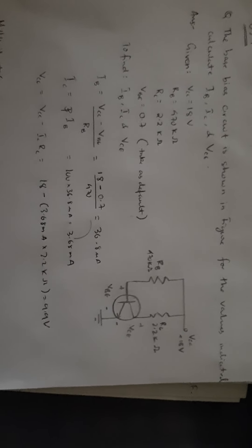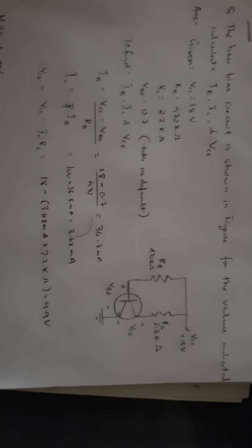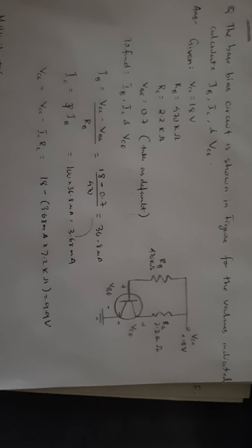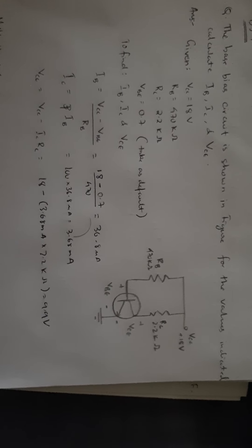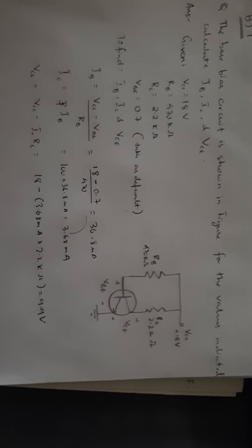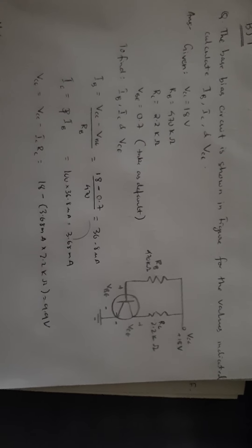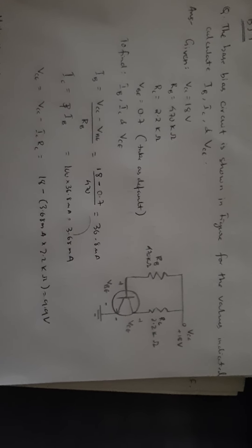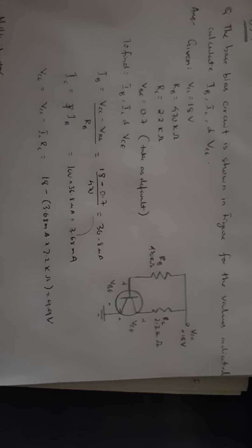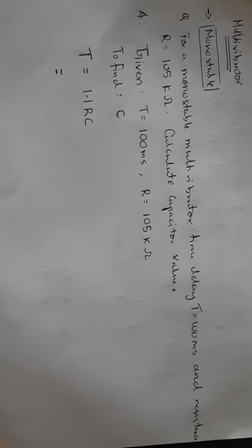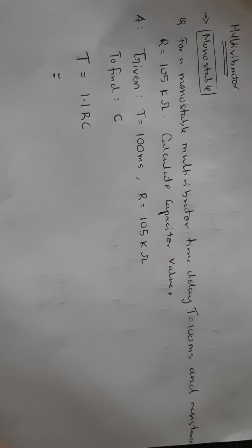After filling in the values we get the answers and the question is done. We have to do the same for base bias, collector bias, or voltage divider bias — the formulas are a bit different but just concentrate on IB, IC, and VCE.